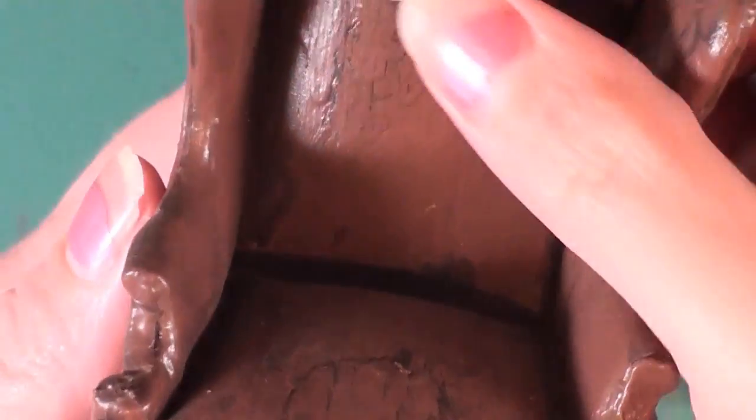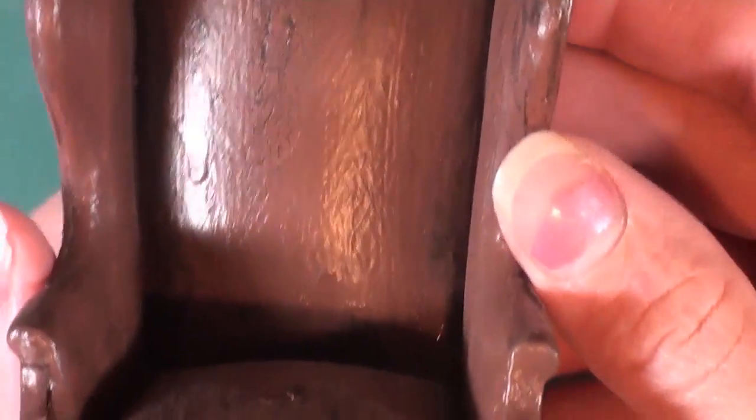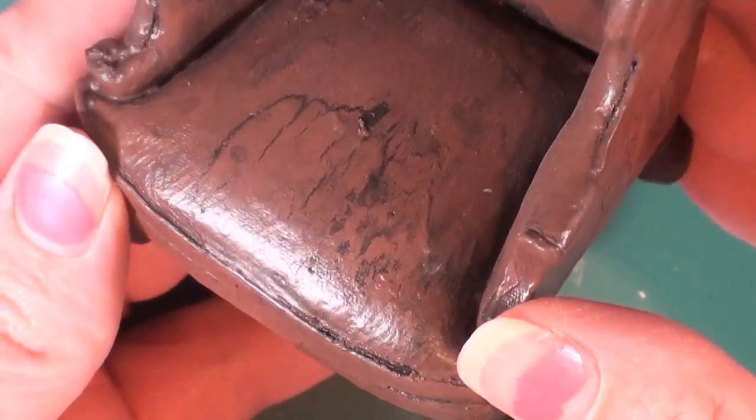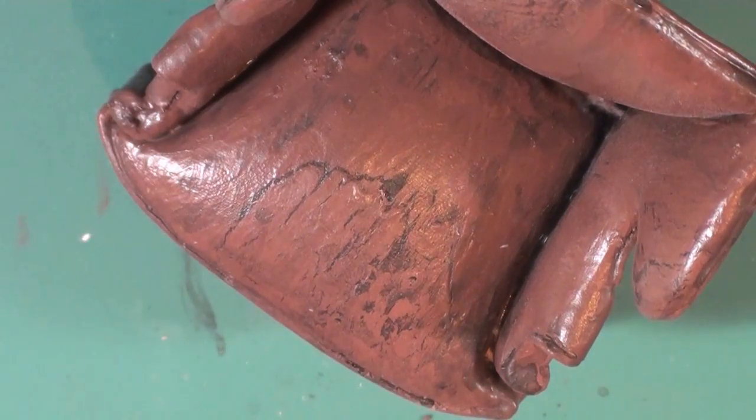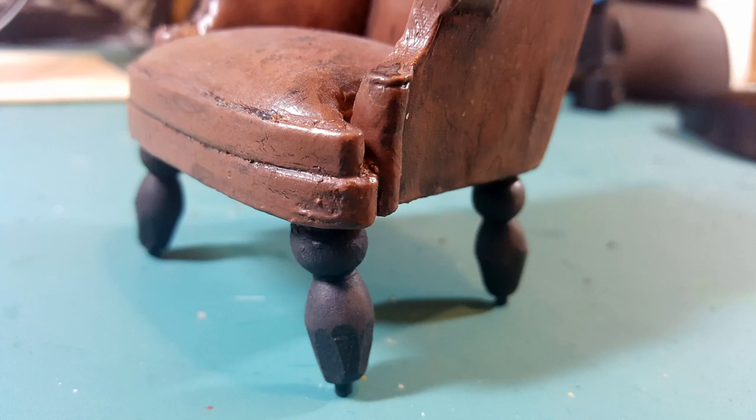As you can see, I'm pushing on the cushion. I just wanted to show you that the paint and the Mod Podge didn't permanently harden the fabric. So it even feels like leather, which is really cool. So anyway, I hope you guys enjoyed this little tutorial slash redo that I put together.